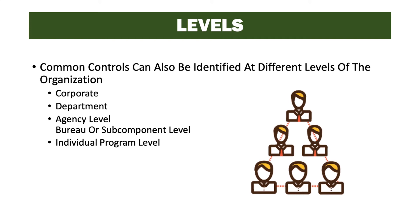Common controls can also be identified at different levels of the organization: corporate, department, agency level, bureau, subcomponent level, or the individual program level. In different departments, different common control providers may be assigned for similar or the same controls available in other departments. For example, the access control requirements of the human resources department may be different than the research and development department, so they would inherit common controls from a higher level in those departments, but not the same sets of controls.